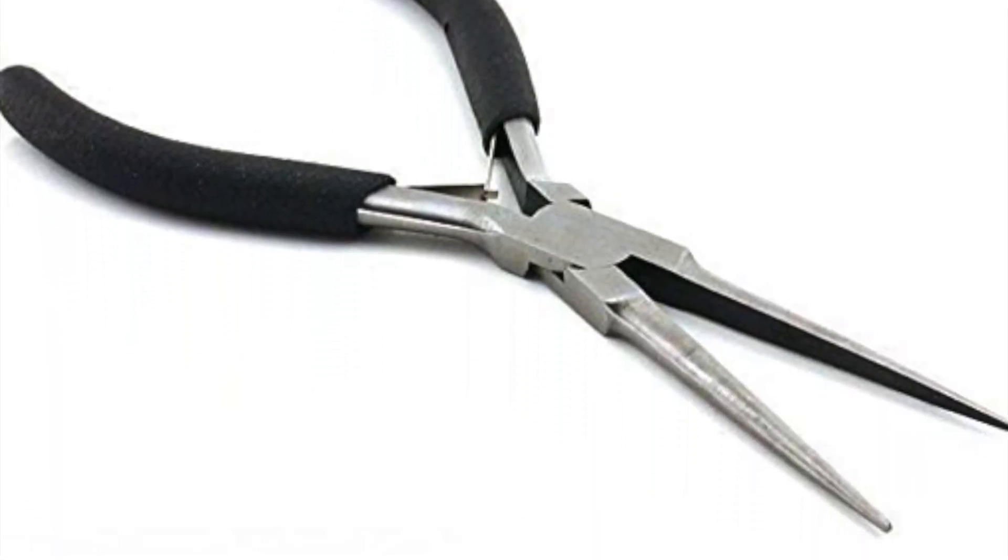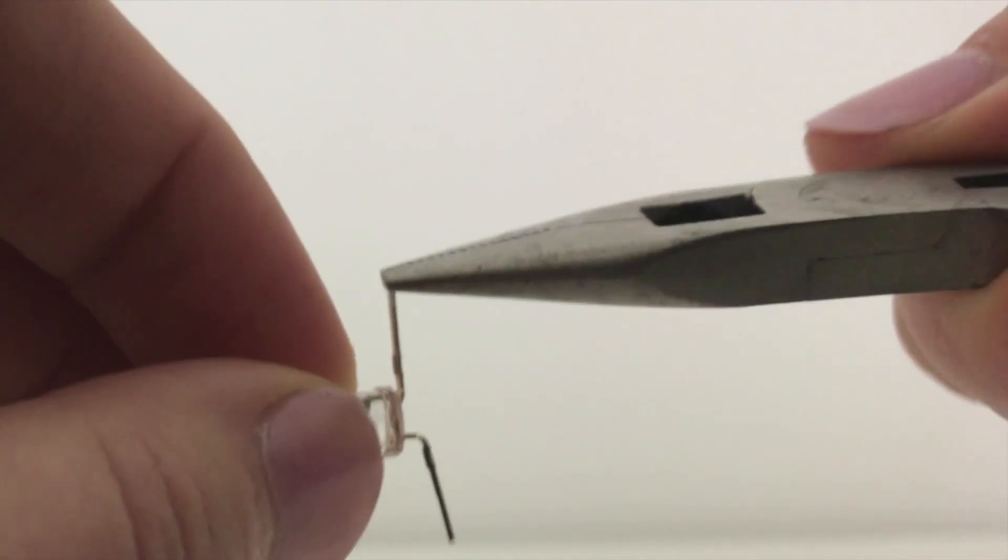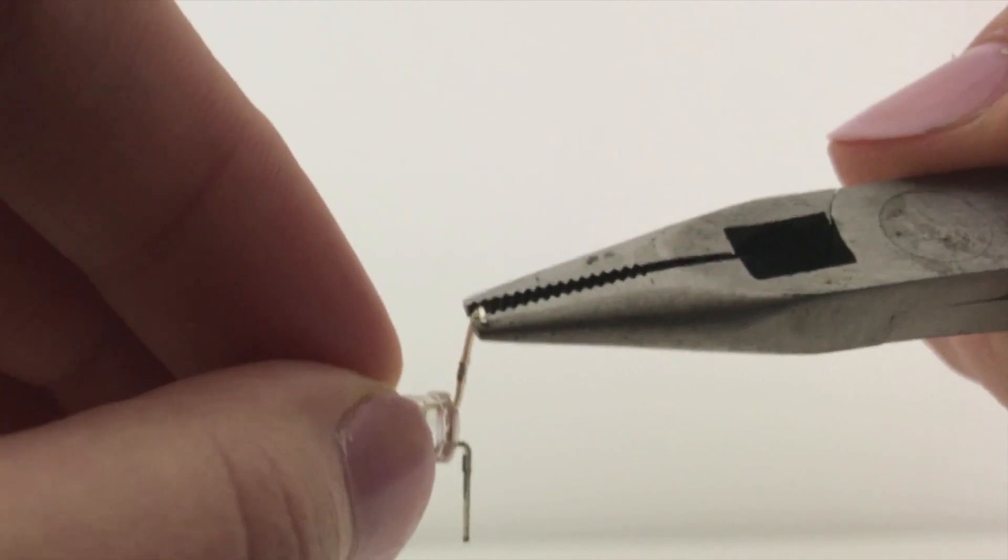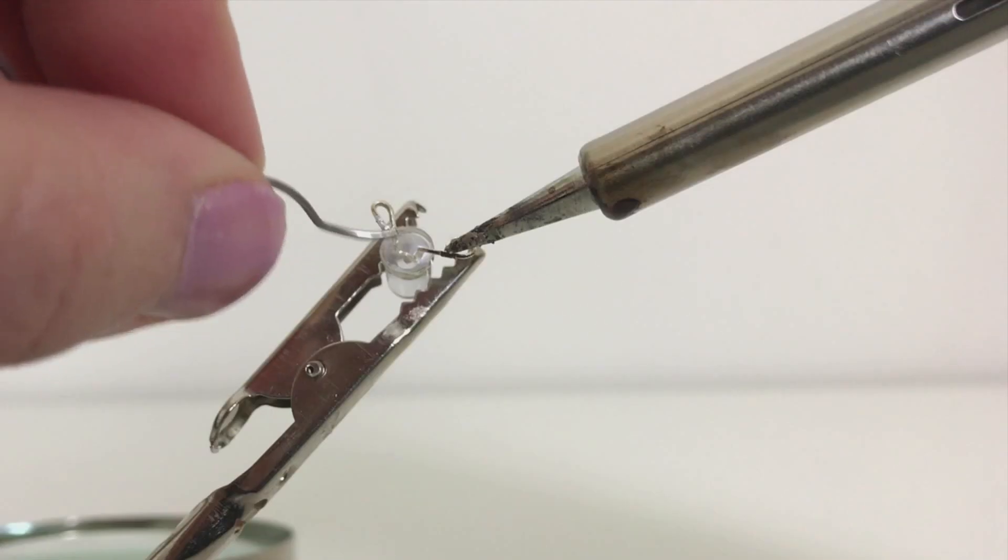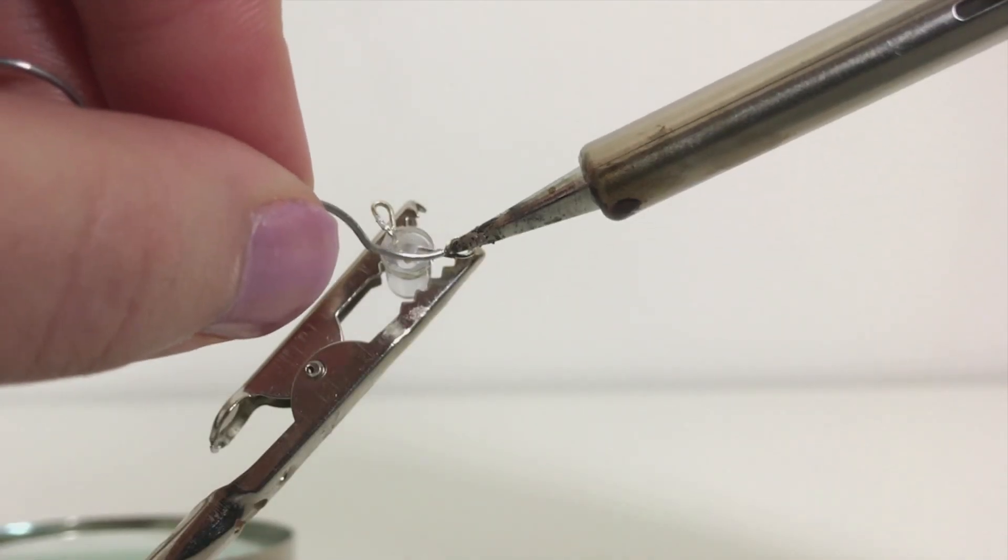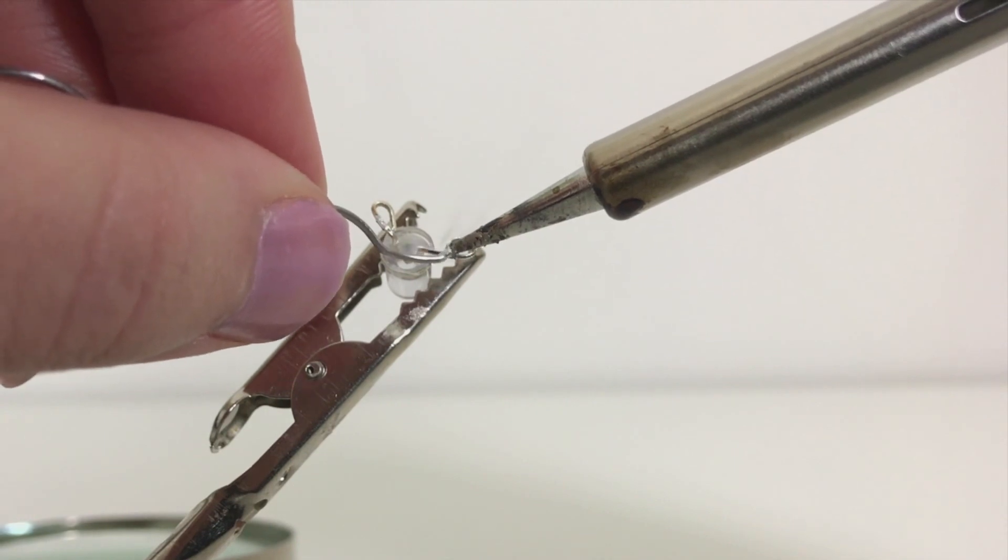For both techniques you'll require a small pair of needle nose pliers. You can purchase special pliers designed for electronics or jewelry, but any small set of pliers will work. The first technique requires soldering, and the second only requires pliers. We'll start with the solder technique first.